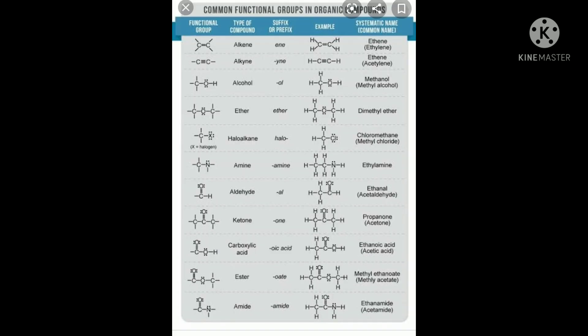Next, we discuss organic compounds having functional groups. First, C=C double bond — alkene; we use the suffix 'ene'. Second, C≡C triple bond — alkyne; we use the suffix 'yne'. Third, the OH group — alcohol; the suffix used is 'ol'.